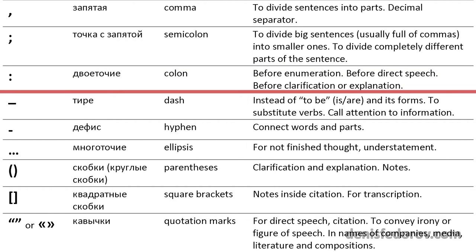Colon — двоеточие in Russian — we use again as in English. Usually we use colons before enumeration, and also when the second part of the sentence is explaining or clarifying its first part. The main difference for colon is that in Russian we place it before direct speech, but in English we place a comma. We will discuss that later.